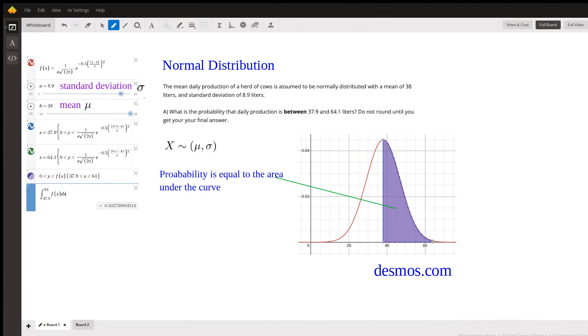Okay, so we've got a herd of cows and the daily production is assumed to be normally distributed. Okay, so the normal distribution...